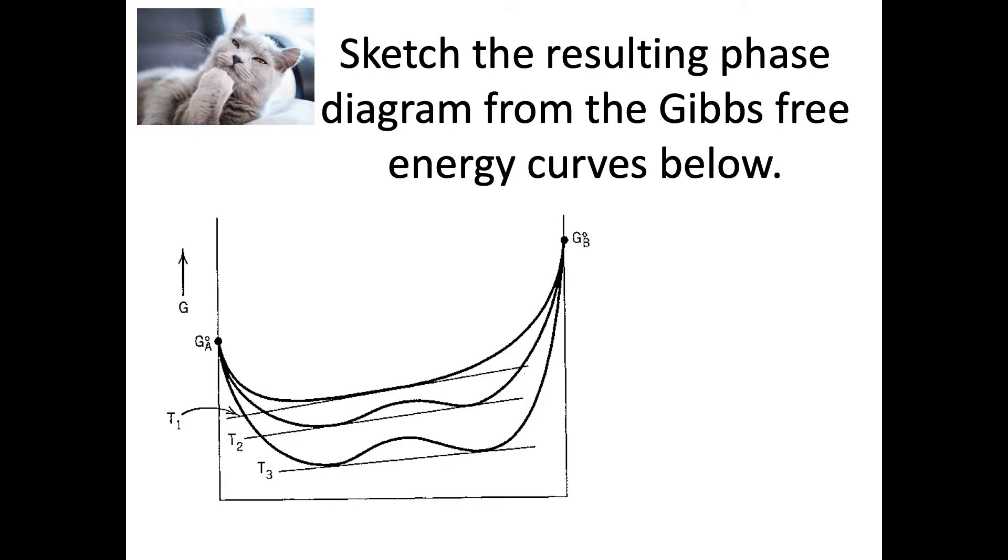Let's use that knowledge that we just looked at for the inflection points. I've given you a series of Gibbs free energy curves for different temperatures. In this case, T1 is the highest temperature, then T2 lower, T3 lower than that. See if you can sketch what the resulting phase diagram would look like for this material using these inflection points and using what we just talked about with the common tangent technique. Take a minute, see if you can sketch that out.